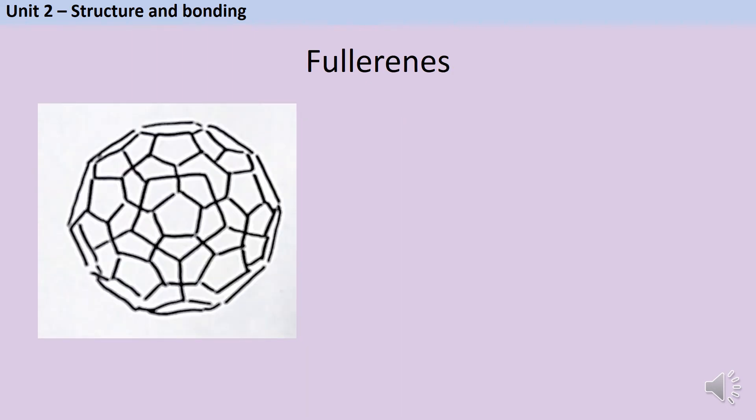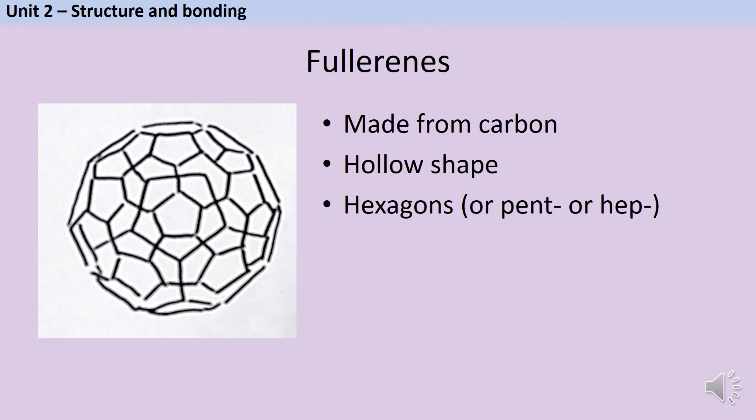Carbon can also exist in the form of fullerenes, a really interesting class of molecules with hollow shapes, so they're often cages or long tubes or balls, and these tend to be based around a hexagonal structure, although you do also see rings of five or seven carbon atoms. The first one of these to be discovered was named Buckminster Fullerene, after an architect who designed buildings that looked a lot like the molecules. Buckminster Fullerene contains 60 carbon atoms, so it's often also called C60.